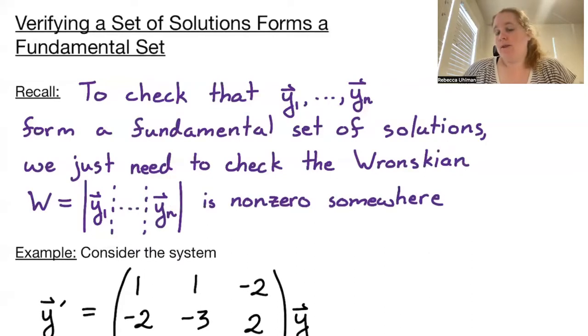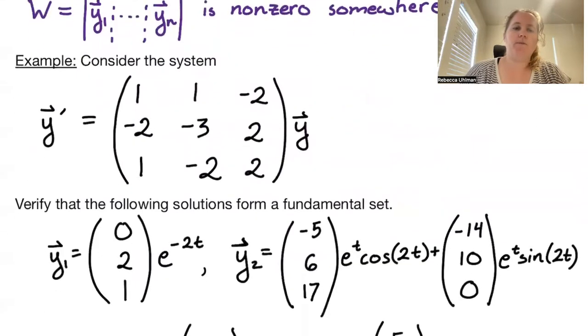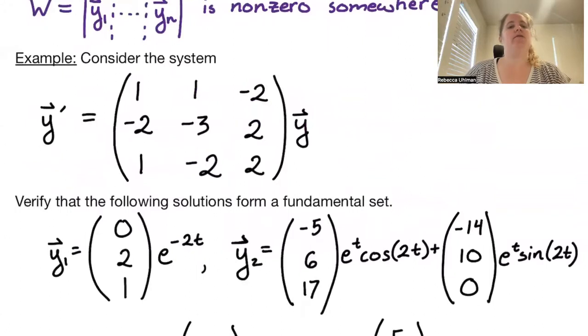This is the advantage over previous versions in that we do not need to take any derivatives. So let's consider the system Y prime equals the matrix first row 1, 1, negative 2, second row negative 2, negative 3, 2, third row 1, negative 2, 2, all times Y.